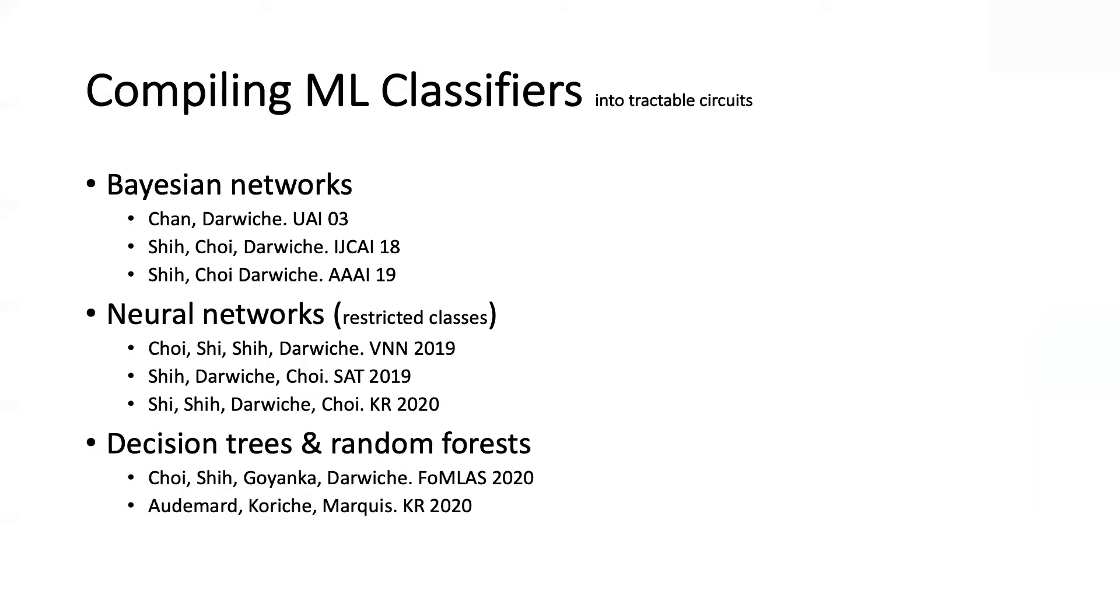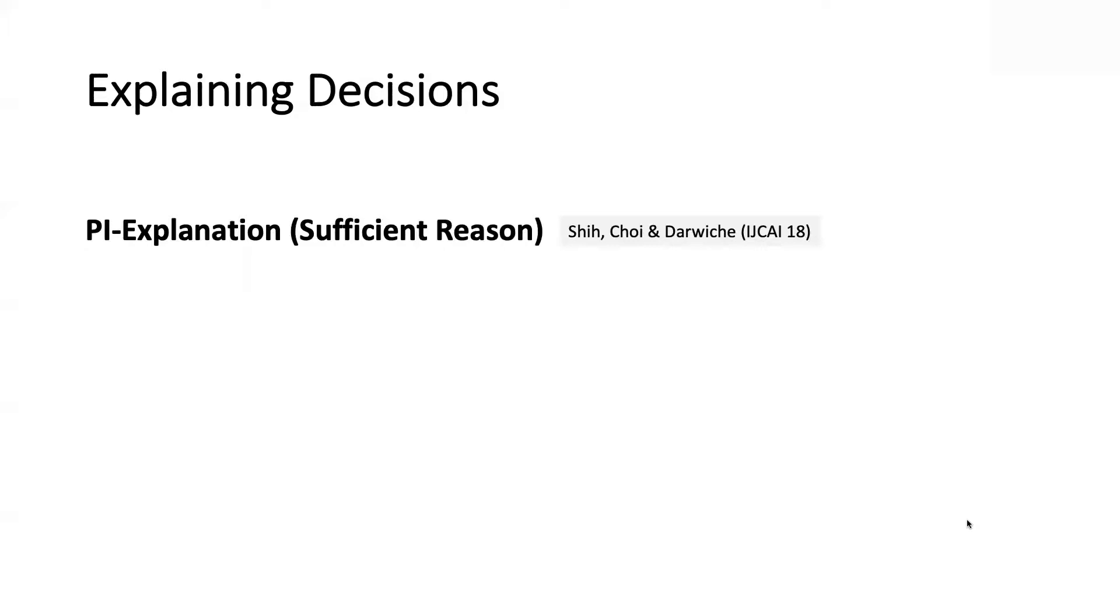In this work, we assume that the compilation process took place, and we are handed a tractable circuit representation of the input-output behavior of the machine learning system. And we're going to be focusing on the reasoning part, and in particular, explaining the decisions of that machine learning classifier. We're building on this proposal from about two years ago, which I referred to as PI explanations, which in this figure we also call sufficient reason.